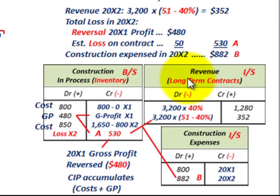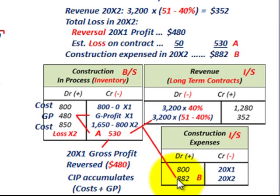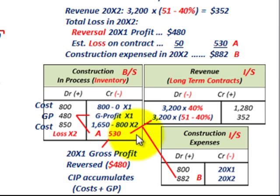On the income statement revenue account: year 20x1 recognized 40% of $3,200K equals $1,280K in revenue. Year 20x2 recognized 11% of $3,200K equals $352K in revenue. Construction expenses were $800K in 20x1 (equal to costs incurred). In 20x2, the $882K construction expense is the balancing amount derived from knowing our revenue of $352K and the $530K loss we had to record against CIP.